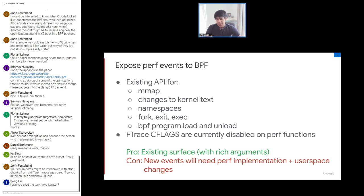Another option is to use the perf subsystem. Perf does a lot more than its name suggests. It turns out perf is nicely suited for audit use — the perf event for mmap calls is exactly in the right place. Perf also covers interesting events like changes to kernel text, namespace creation, fork, exit and exec events, and BPF program loads and unloads. The sad side is that ftrace C flags are disabled on all perf functions, meaning you can't attach kprobes or fentry to them.